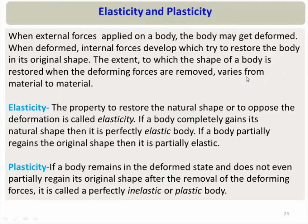Suppose I apply an external force over a material and the body changes its natural shape — because of that, a restoring force develops inside the body. Now if I remove that external force and the body regains its natural shape, that type of body is called an elastic body. If the body completely regains its natural shape it is called a perfectly elastic body; if it partially regains its natural shape it is called a partially elastic body. This property of a material is called elasticity.